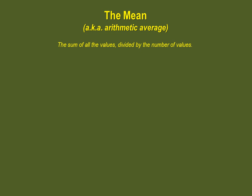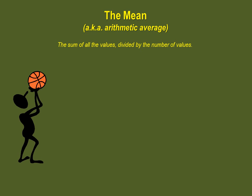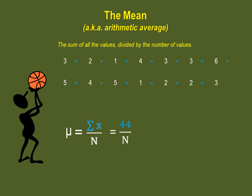Imagine that the SportsCenter has compiled the number of times per week athletes from the basketball team come to the gym outside of team training. Because we have results for all the players in the basketball team, we are calculating the population's mean. We first do the sum of all the values, which gives us 44. We then divide by the number of values in our population, which is 14. The result is 3.14 times per week.